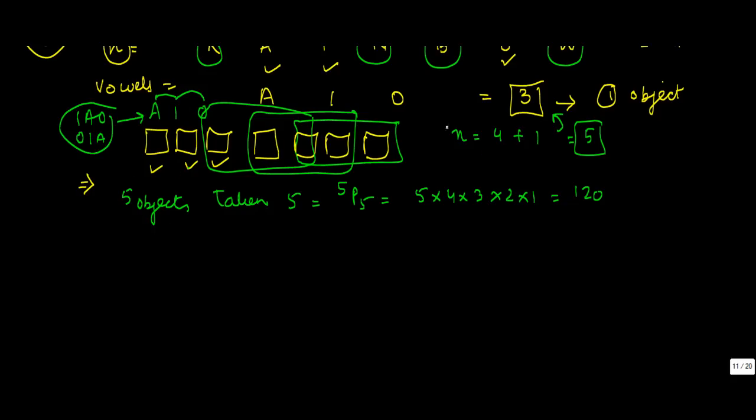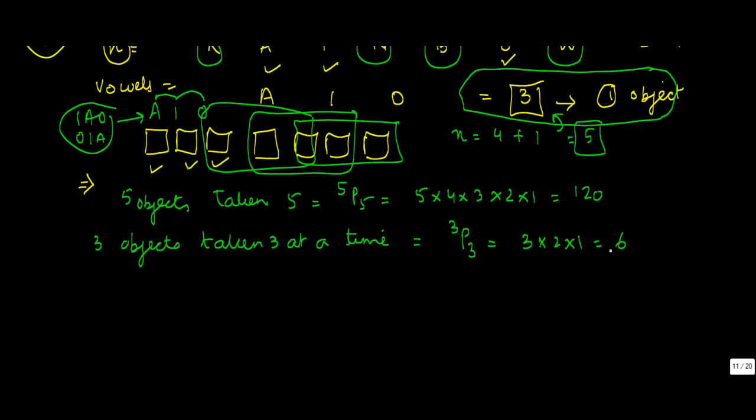So for the vowels, to find out how many different ways there are amongst themselves that they can be put together, that will be three objects - three vowels - taken three at a time, which is 3P3, or 3 × 2 × 1 = 6.